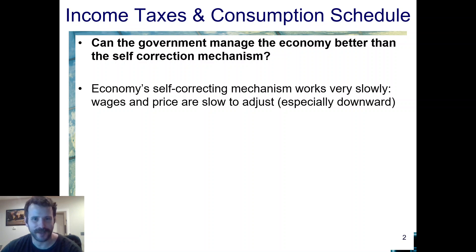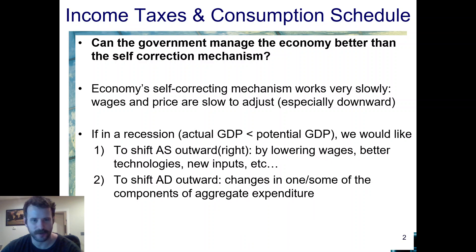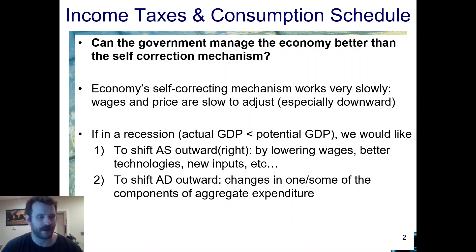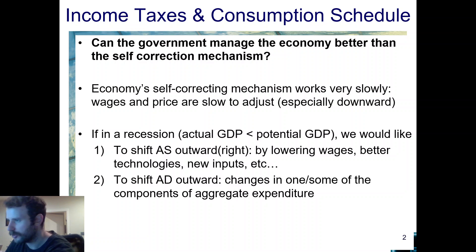So the economy's self-correcting mechanism works very slowly. Wages and prices are slow to adjust, especially downward. So if you're in a recession and you want aggregate supply to shift outwards by lowering wages — if you're in a recession, you do want aggregate supply to shift downward while aggregate demand shifts outwards.